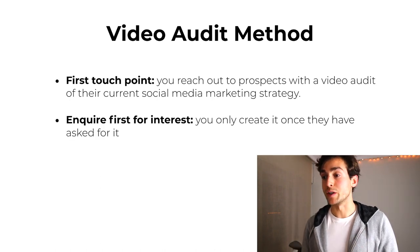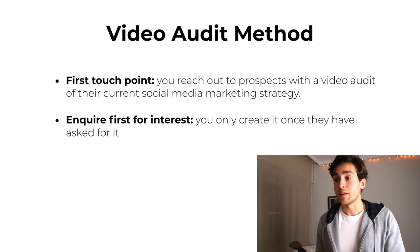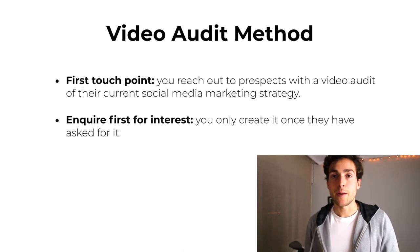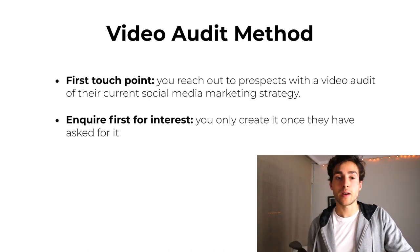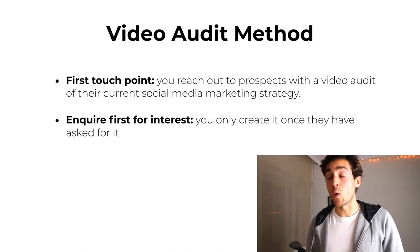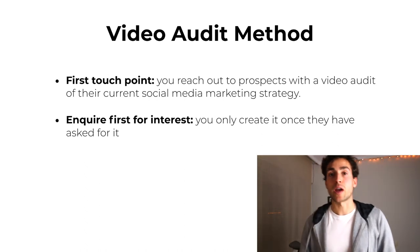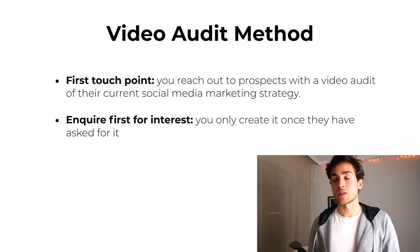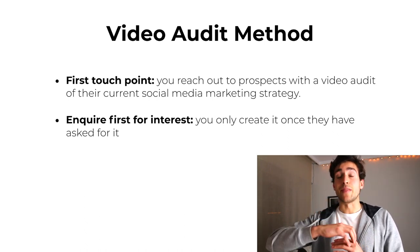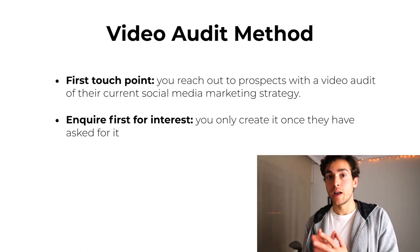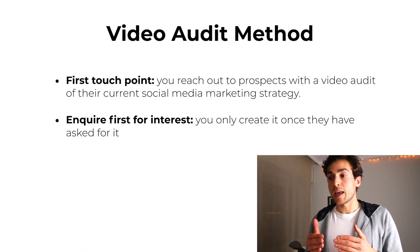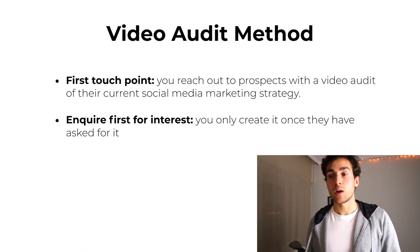The second thing is to inquire first for interest. That's kind of the approach a lot of people take — they just reach out to their desired prospects with a video audit. What I do instead — and I still use that first method — but in most cases I actually inquire first for their interest. I only create the audit once they ask for it. Basically what I tell them is, 'Hey, I've created this audit — the written part is done — if this is of interest to you, let me know and I'll send it right over.' Once they confirm, I record the video, which saves me a ton of time.